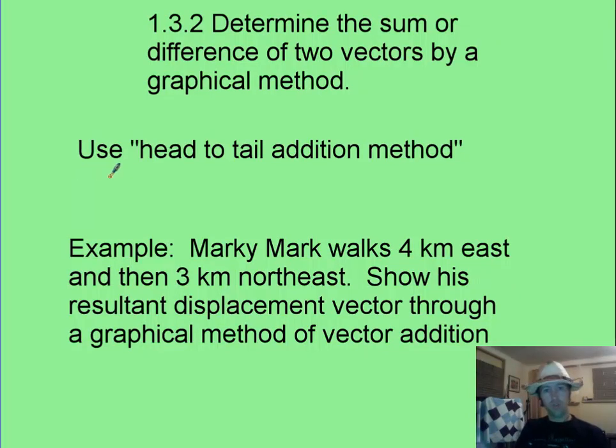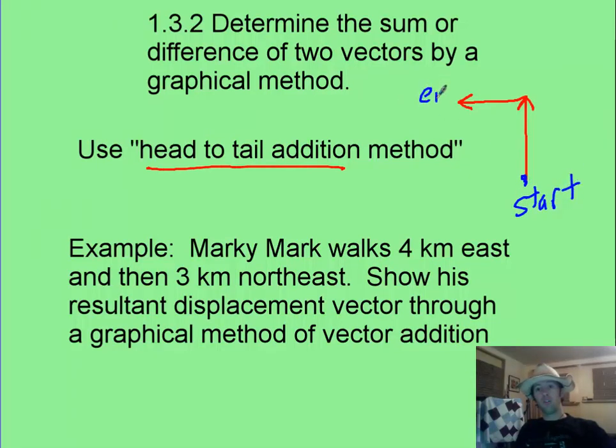As you add two vectors in a graphical method, we call it the head-to-tail method. And what that basically consists of, you take one vector, and its head is up here, you put the tail of the other one on it, and you add it together. And then your resultant vector always goes from where you started to where you ended, and you get what we call the resultant vector here.